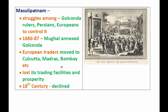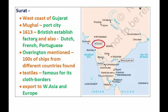Now let's look at Surat. Surat was and is a port on the western coast of Gujarat. During the time of the Mughals it was a major port city, and in 1613 the British established a factory there.